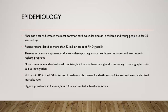With regards to epidemiology, rheumatic heart disease is the most common cardiovascular disease in children and young people less than 25 years of age. There are more than 33 million cases worldwide, but unfortunately many more may exist due to underreporting. Countries most affected have scarce healthcare resources and few systemic registry programs. Cases are more common in underdeveloped countries but have become a global issue due to demographic shifts from immigration. In the US, it holds the eighth rank for years of life lost and standardized mortality rates, and is more common in Oceania, South Asian, and Central Sub-Saharan African populations.